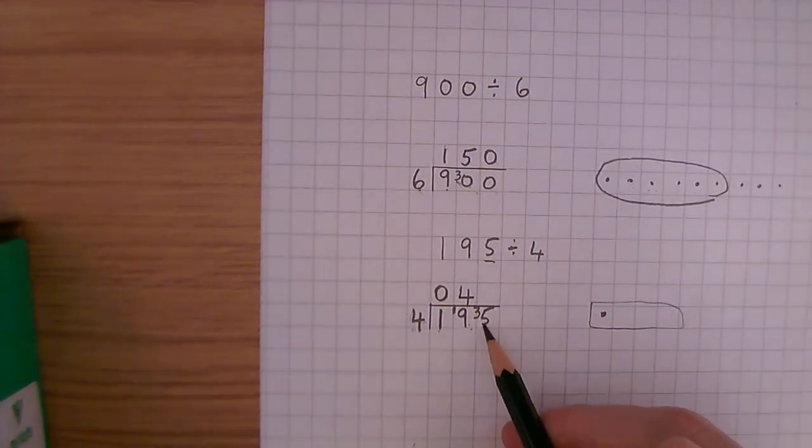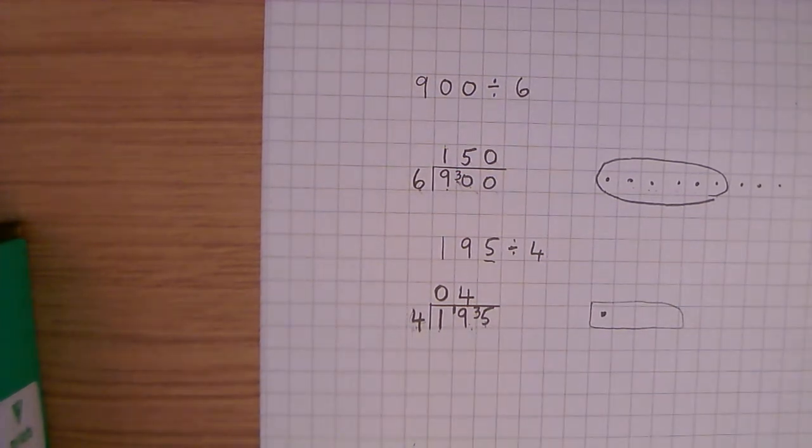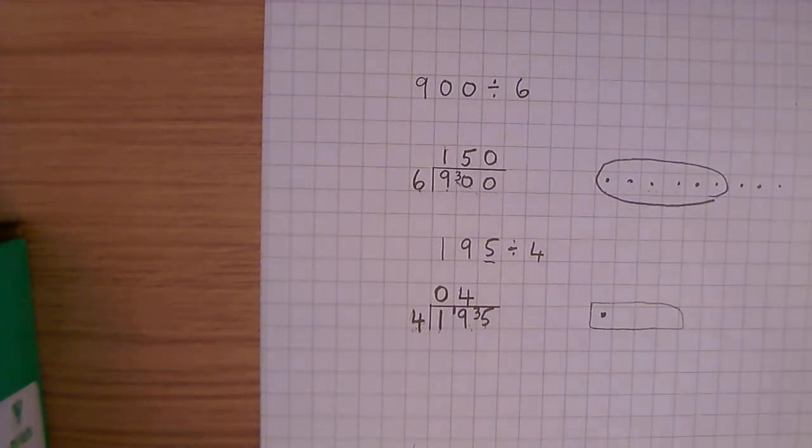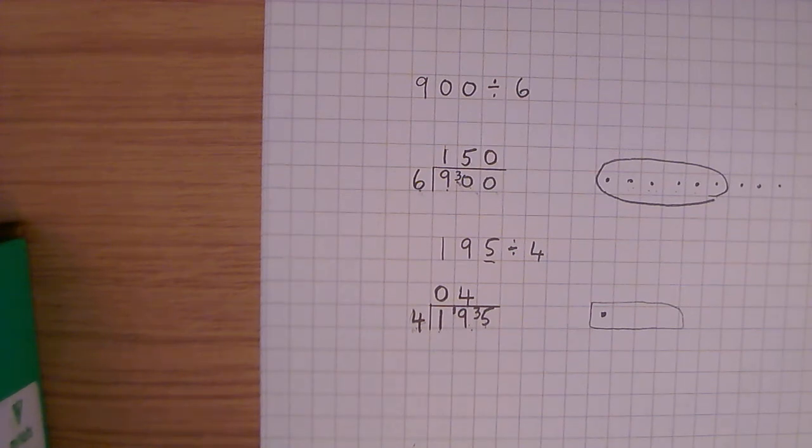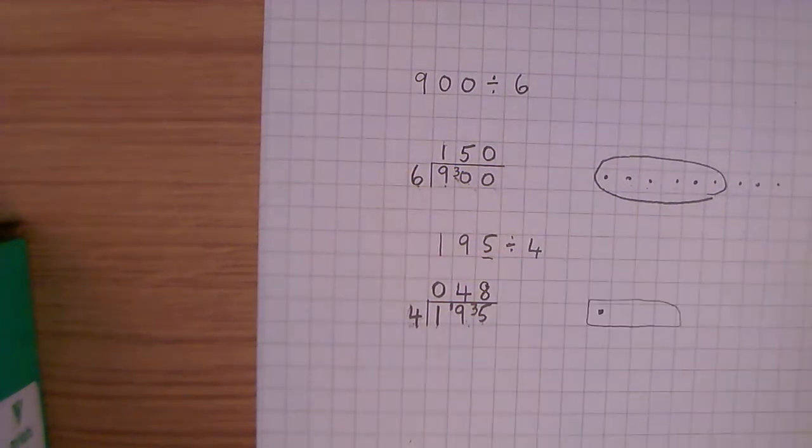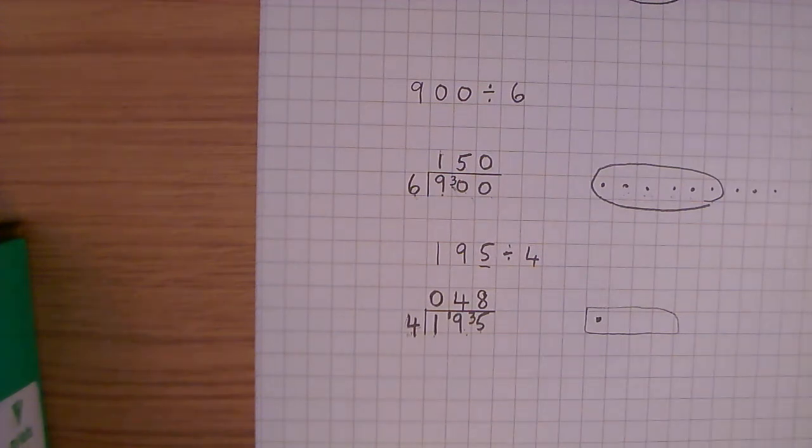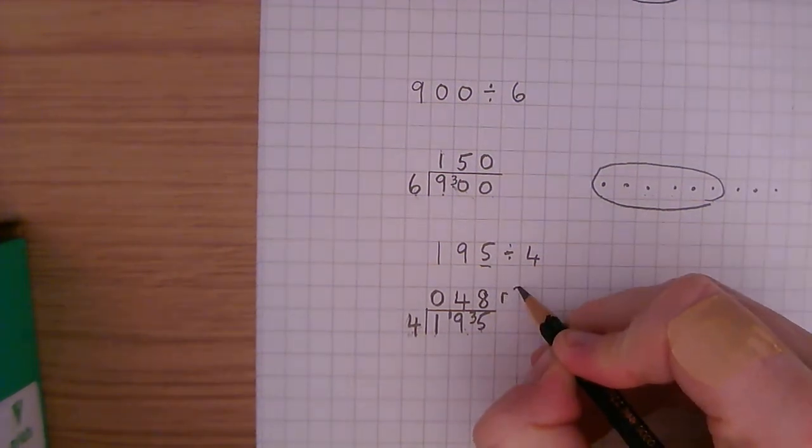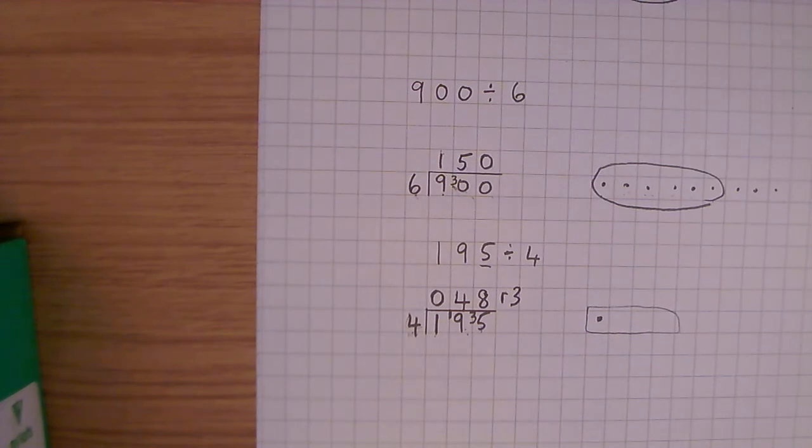My next question is 35 divided by 4, or how many 4's are there in 35? 4, 8, 12, 16, 20, 24, 28, 32. I can't go to 36, because I've only got 35. And on my fingers, I've got 8 fingers here that I've counted. 4 times 8 is 32. So I'm going to write down 8. And I'm going to count from 32 up to 35. 33, 34, 35, that's 3. Remainder 3. So our answer is 48, remainder 3.